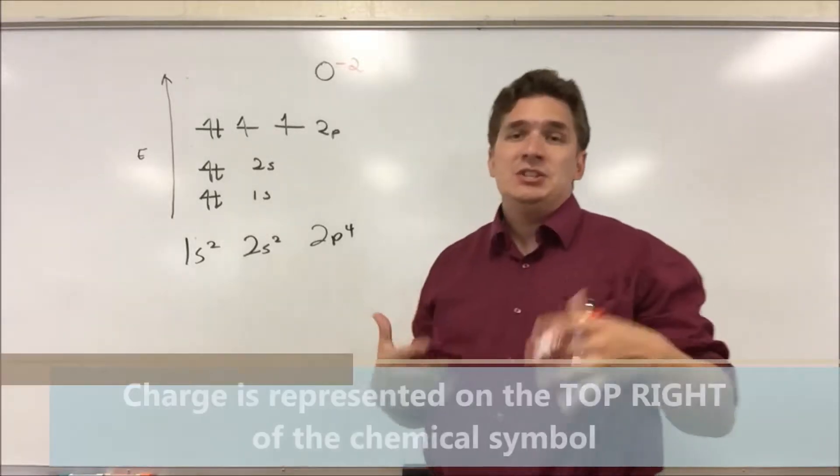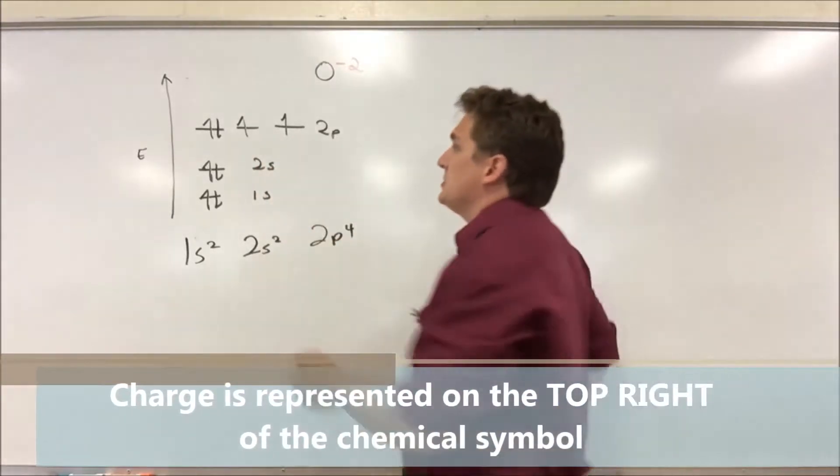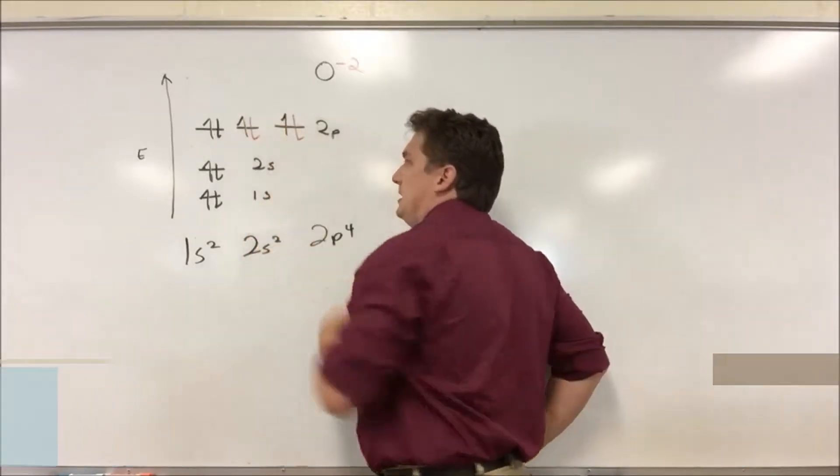So if we have two additional electrons, where do they go? We've only got two orbitals left. And so we're going to stick our additional electrons here and here.